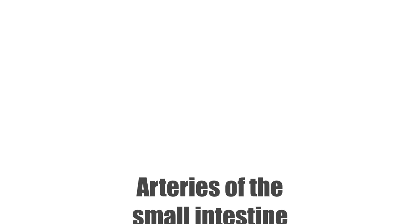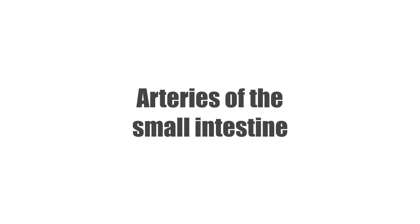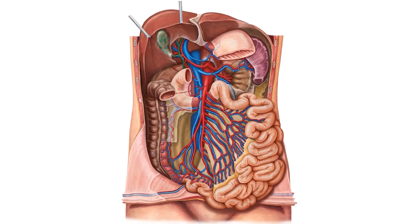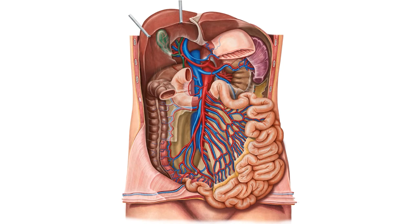Hello everyone, it's Megan from KenHub here and welcome to our tutorial on the arteries of the small intestine. During this tutorial we will mainly be focusing on the image you can now see in front of you, which is an anterior view of the abdominal cavity. In this image, the abdominal wall and some organs, such as the transverse colon, the pancreas and the stomach, have been dissected away. This has been done to give us a better view of the small intestine and its blood supply.